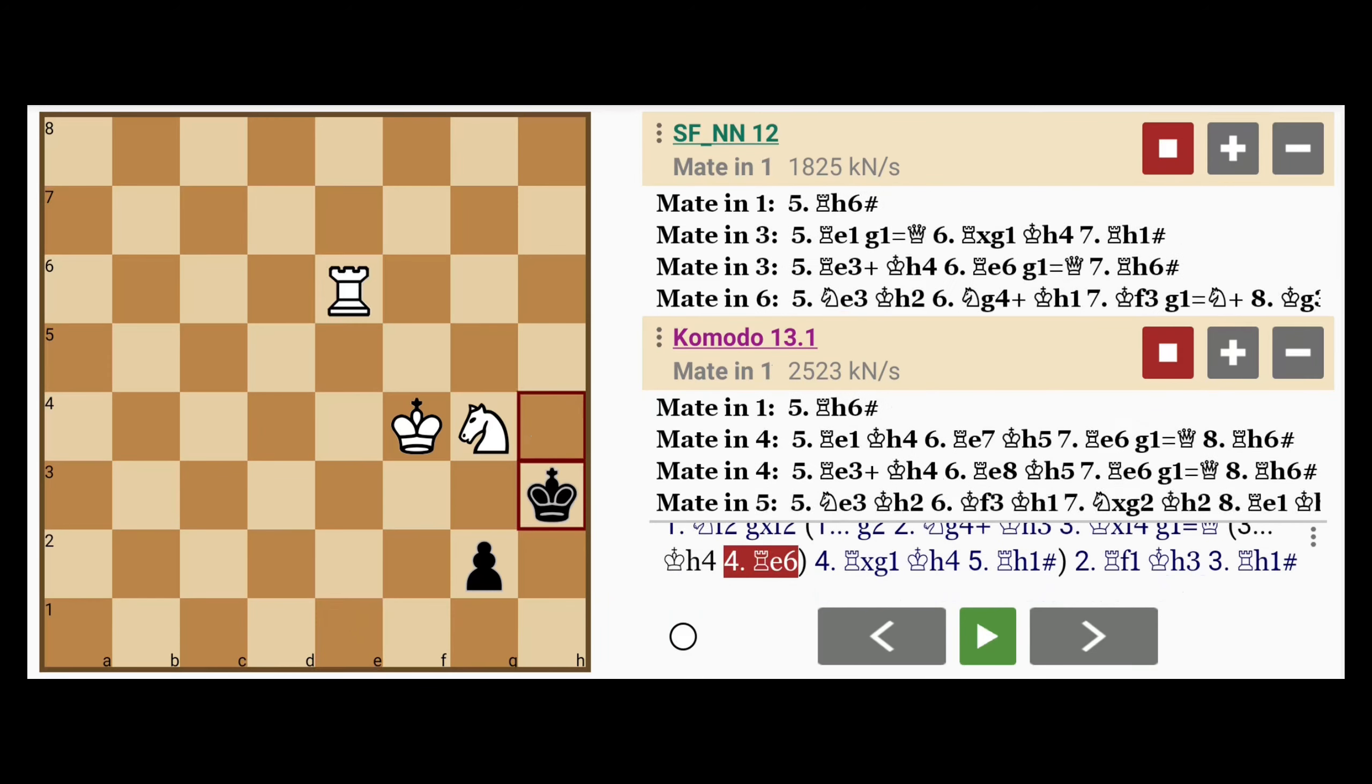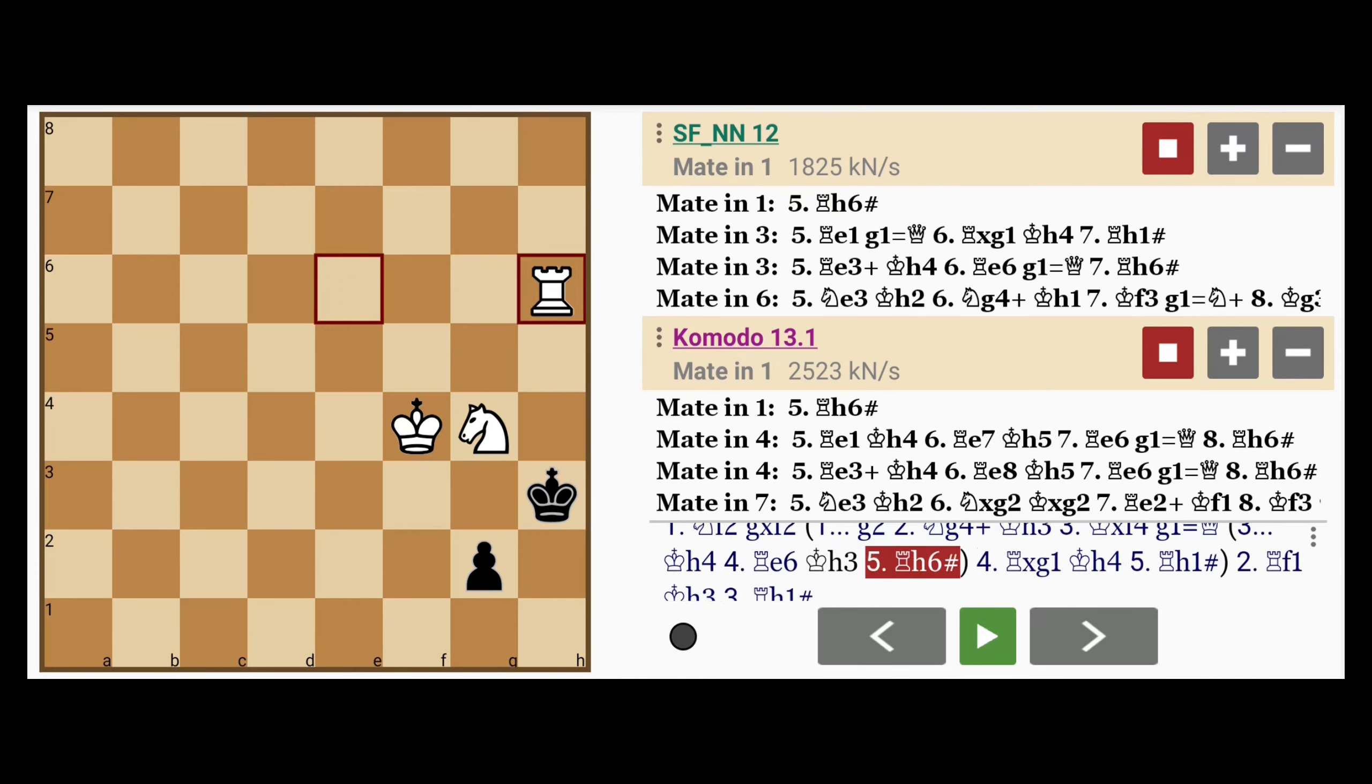And if the king moves back down to h3, rook to h6 mates, notice how the pawn on g2 blocks the king's escape square.